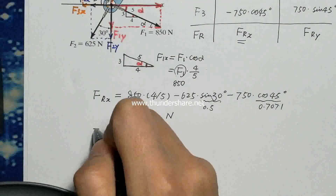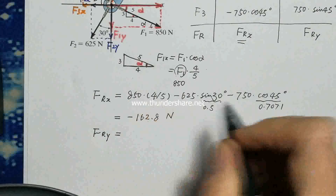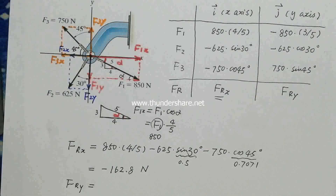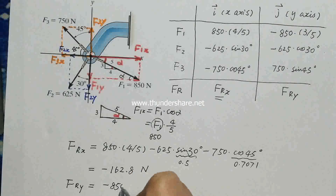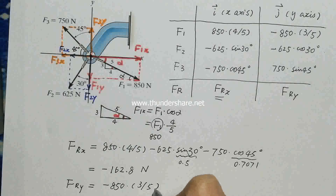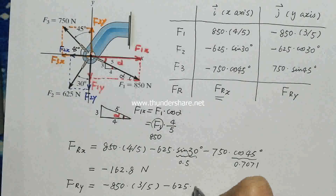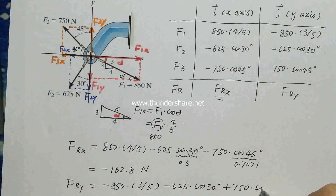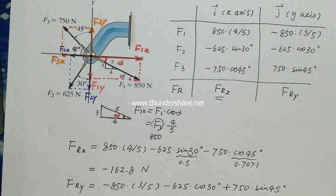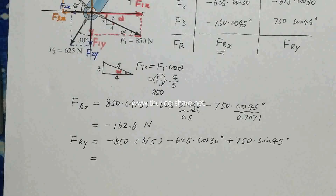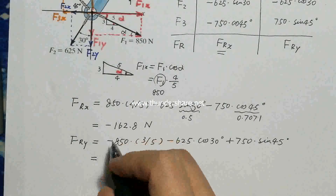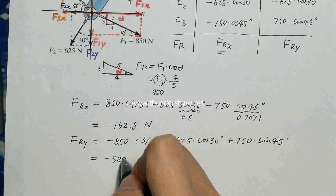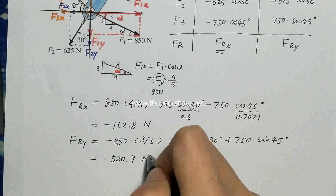Similarly, for FRy, sum all three y-components. Just copy them in. Using four significant figures with the calculator, you will get an answer of minus 520.9 newtons.